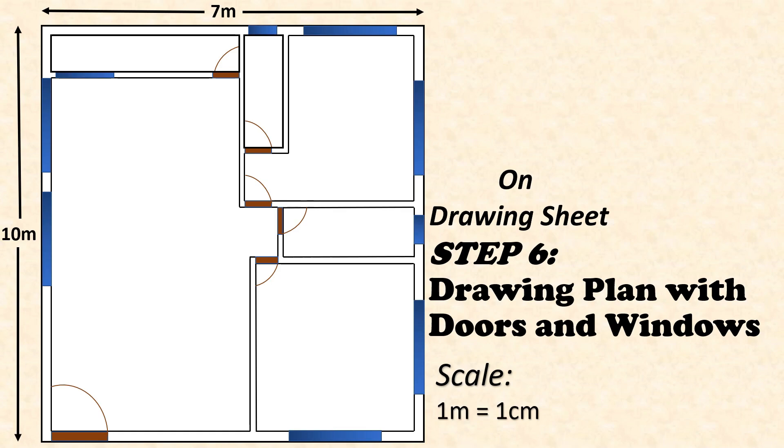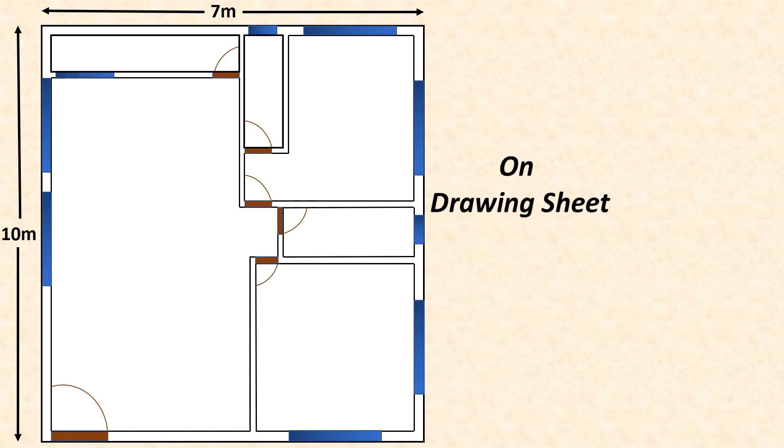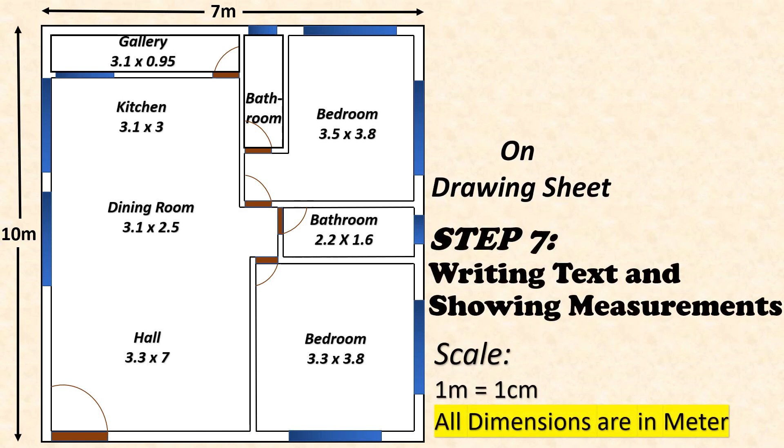Here our last step is writing text and showing measurements. We need to mention names of each room, below which the dimensions are mentioned. Important here is that our first dimension mentioned should be for the horizontal distance measured excluding the wall thickness, that is only the usable area, and the second dimension shown should be for the vertical usable distance measured according to our scale. Now our two-dimensional planning is completed.